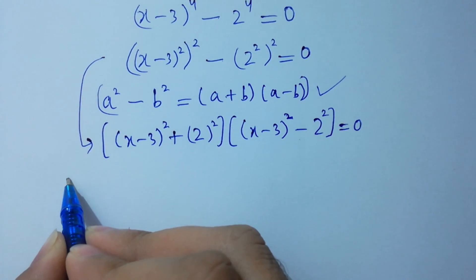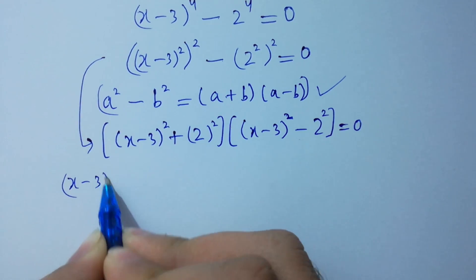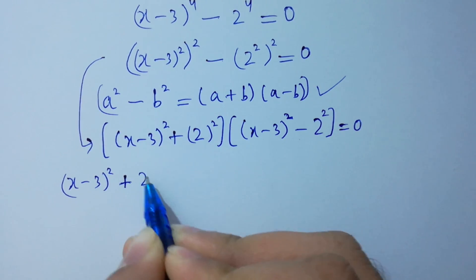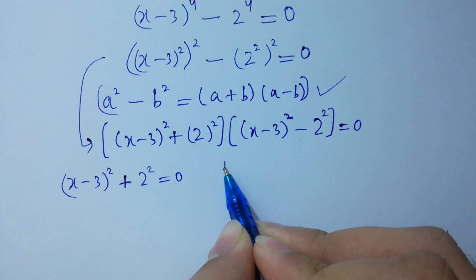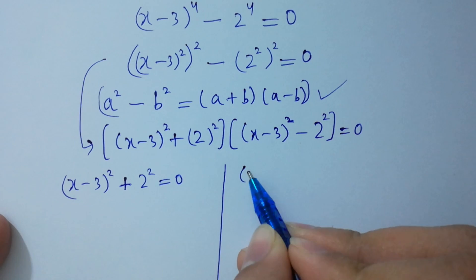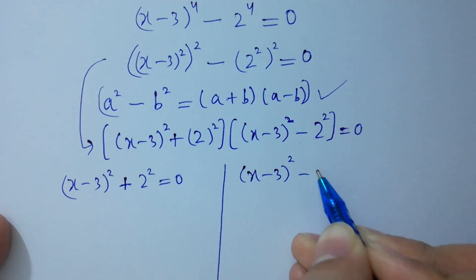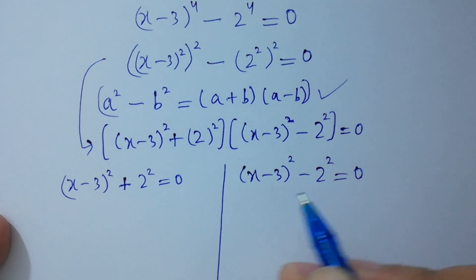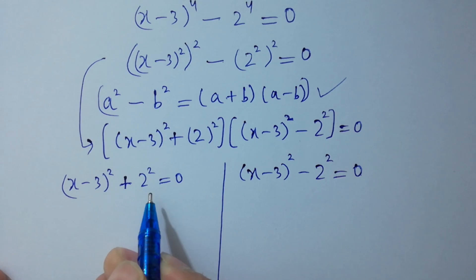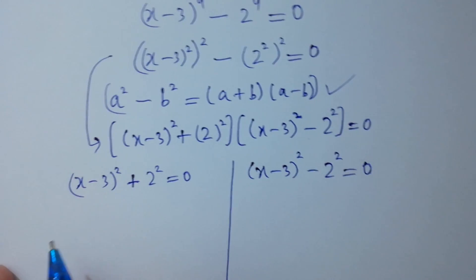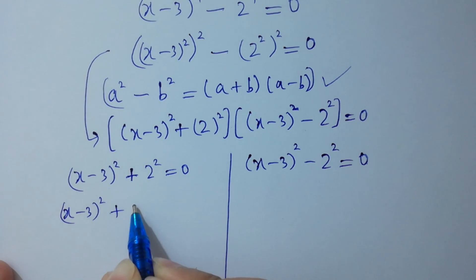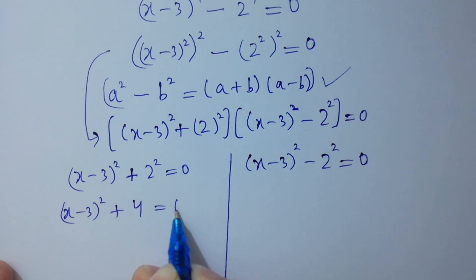Either (x minus 3)^2 plus 2^2 equals 0, or (x minus 3)^2 minus 2^2 equals 0. For the first case: (x minus 3)^2 plus 2^2 equals 0, so (x minus 3)^2 plus 4 equals 0.